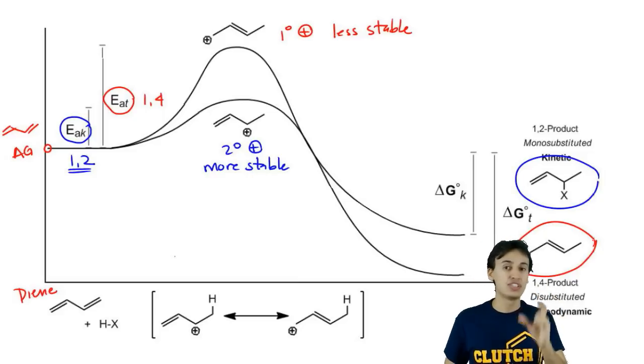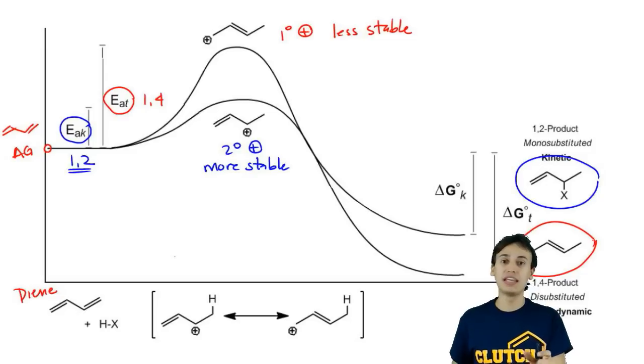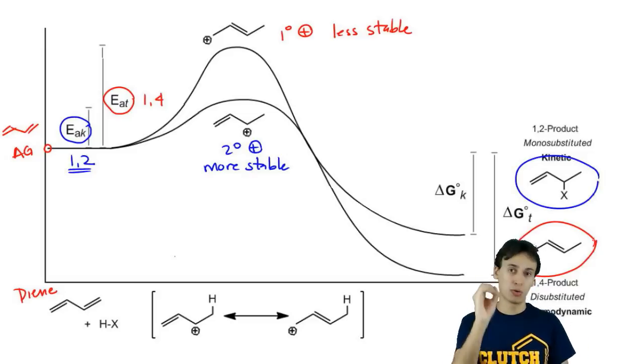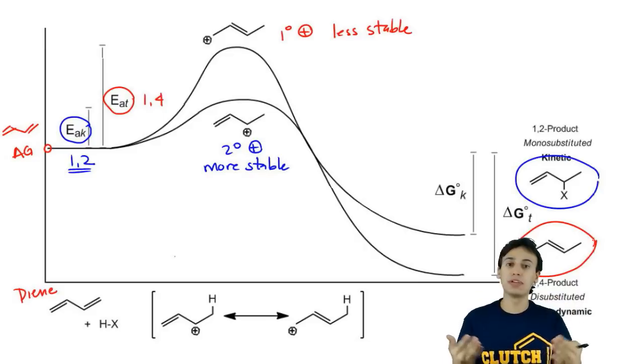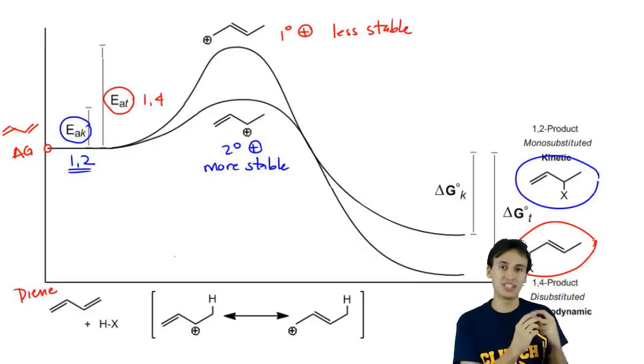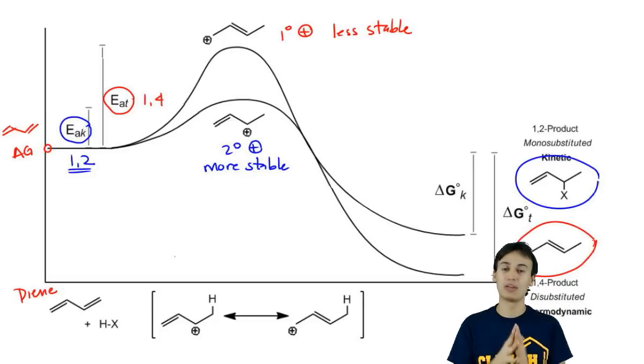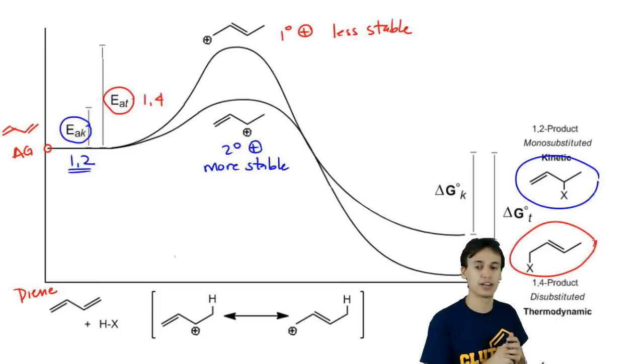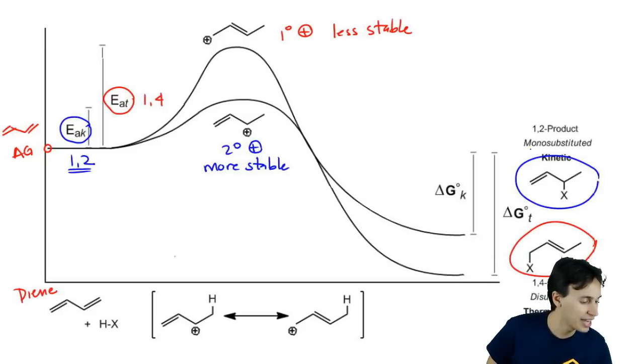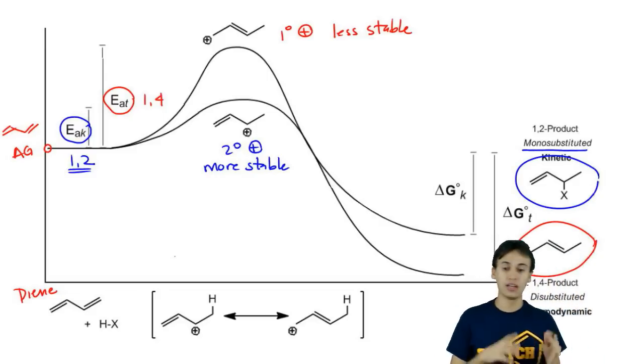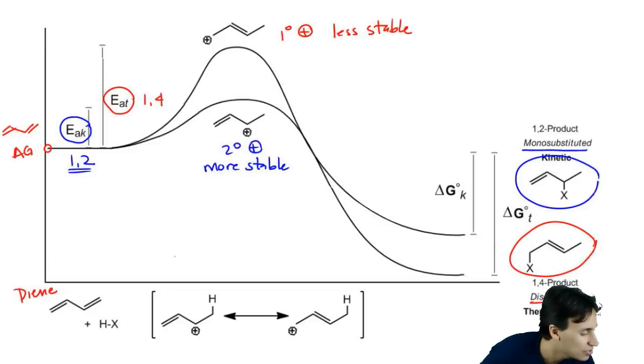What we do see though is that double bonds have different levels of stability depending on how many R groups are surrounding them. I'm not sure if you guys recall the concept of hyperconjugation which said that carbocations and double bonds are stabilized through R groups. That's why a tetra-substituted double bond is much more stable than a mono-substituted double bond. This is a concept that we borrow from elimination reactions way back when we were just talking about elimination reactions. We learned that the most stable double bonds are the ones with the most R groups around them. Well check out these two products. Which of these two products is the more stable one? For my kinetic product, I have a mono-substituted product. Whereas for my 1,4 product or my thermodynamic, I have a di-substituted.